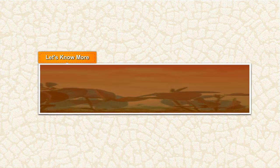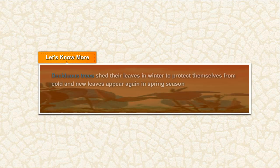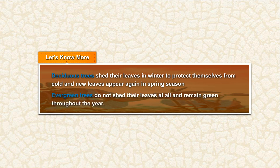Deciduous trees shed their leaves in winter to protect themselves from cold, and new leaves appear again in spring season. Evergreen trees do not shed their leaves at all and remain green throughout the year.